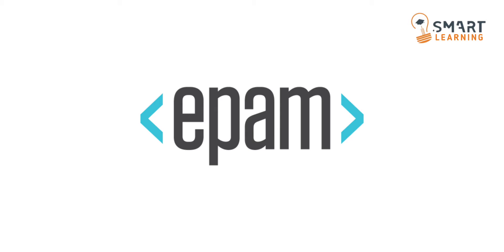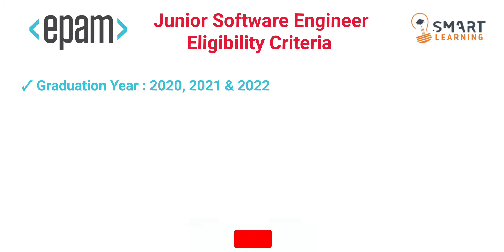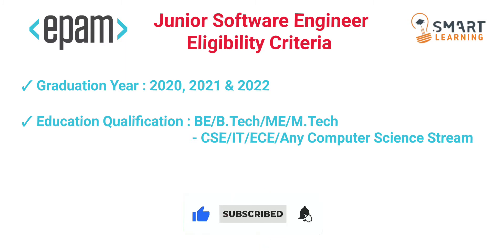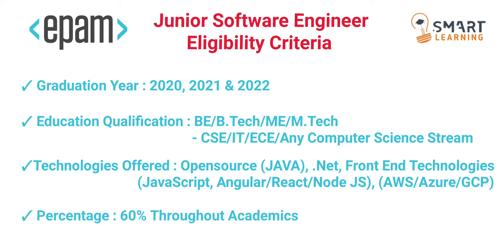EPAM is hiring for two different roles: one is for Junior Software Engineer and the other is for Junior Software Test Automation Engineer. The eligibility for the Junior Software Engineer role: graduation year must be 2020, 2021, or 2022. Education qualification must be BE or BTech, ME or MTech from domains CSC, IT, ECE, or any computer science stream. Technologies offered include Java, .NET, front-end technologies like JavaScript, Angular, React, or Node.js, and cloud technologies like AWS, Azure, or GCP.